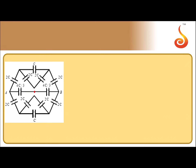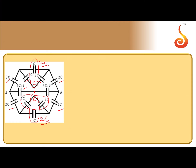By disconnecting point O and redrawing the circuit, it reduces to a simpler form — point O is no more connected. Now it is easy to comprehend. This 2c and 2c are in series, effective is c; these c and c are in parallel, effective is 2c. Similarly, effective of the other pair is c, and c and c in parallel gives 2c. So we get 2c, 2c, 2c in series, and 4c/3, 4c/3 in series, and the effective is in parallel between A and B.